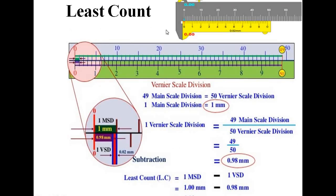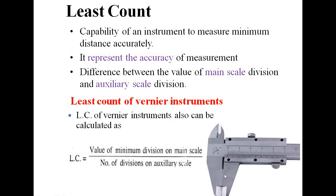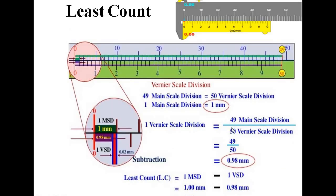When the two jaws meet exactly and the zero line coincides with zero, the instrument is perfect with no error. When the zero boundary shifts forward or backward, error occurs. To calculate the least count: when zero of the main scale coincides with zero of the vernier scale, 49 divisions of the main scale are situated within 50 divisions of the vernier scale.